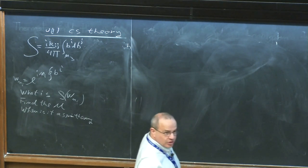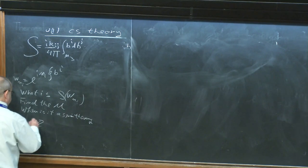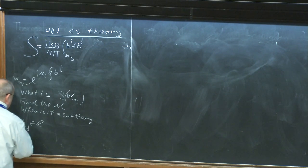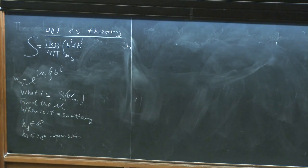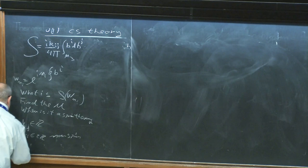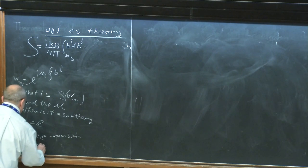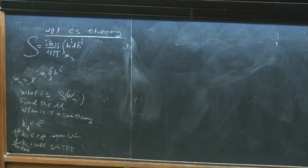I'll give you the answer so you'll know if you got it right. What you need is all K_{ij} to be integers. If all diagonal entries K_{ii} are in 2ℤ — it's non-spin, meaning no transparent line. But if at least one diagonal K_{ii} is odd, it's a spin topological field theory. It's actually a very educational exercise.